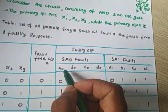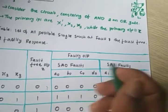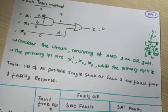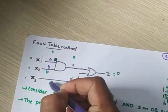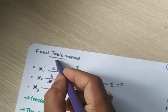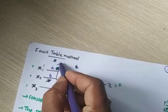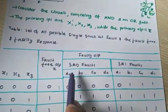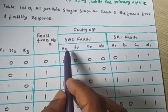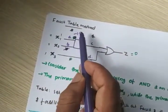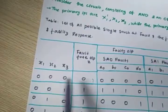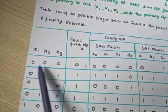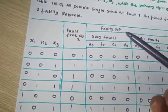For the a0 column — suppose a is stuck-at-0. For input 0 0 0, a0 is checked: a is always forced to 0. The fault-free output is 0, and with a stuck at 0, the output is also 0 — no problem. These are the test vectors which we give to test whether the fault affects the output.